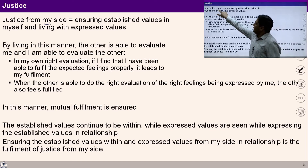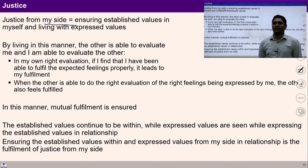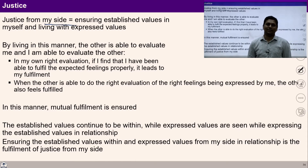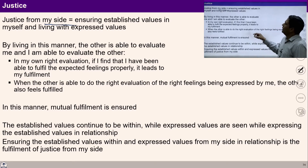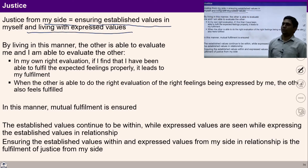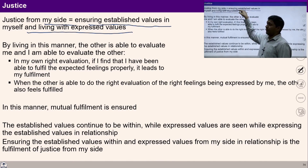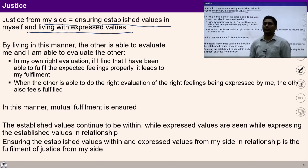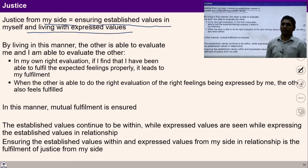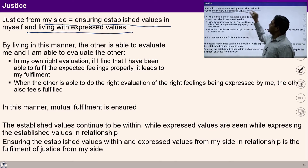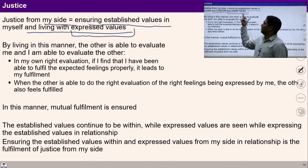Justice from my side means ensuring established values in myself and living with expressed values. It is very important that I should recognize established values which are in me, which are continuously in me. Once I explore these established values, we can see what will be the expressed values. And with the combination of established and expressed values, justice can be ensured from my side.